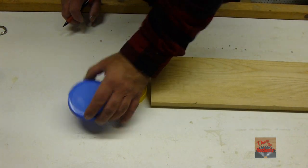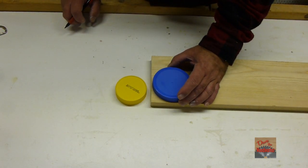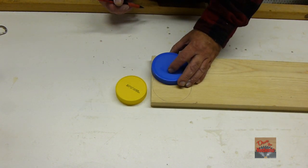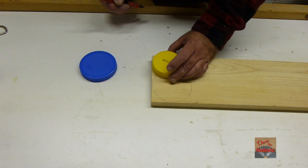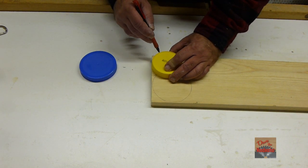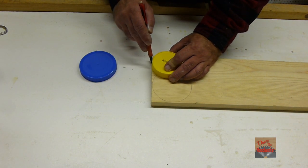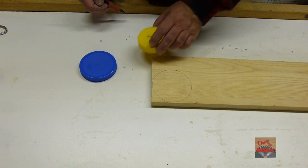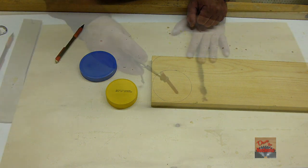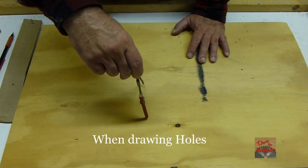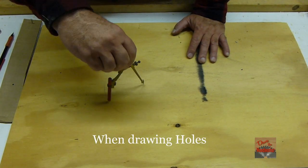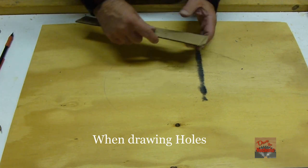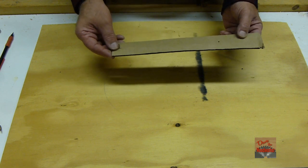I also keep some lids from jars in my shop. If I need to make a circle or radius a corner, they're perfect for that. A compass will only do so big, so what do you do if you need something bigger? Get yourself a piece of cardboard and cut a piece of cardboard.